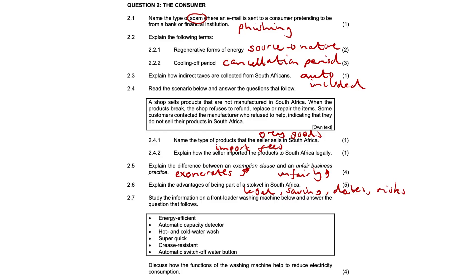2.7, discuss how the functions of the washing machine help to reduce electricity consumption. Feel free to pause the video and have a good read through this text. An energy-efficient washing machine uses less electricity. It also has an option of a cold water wash, which means no electricity will be used to actually heat the water. It also has a super quick function, meaning it will be fast and use less electricity. The automatic capacity detector will ensure that maximum loads are washed — the water level and the cycle type will be adjusted according to the load size. These are little ways to reduce electricity.